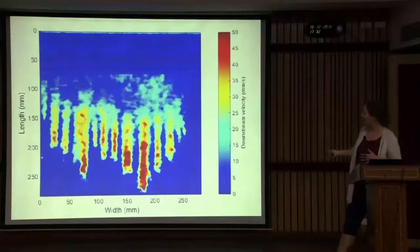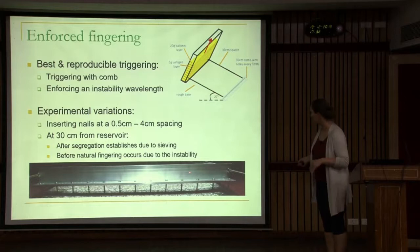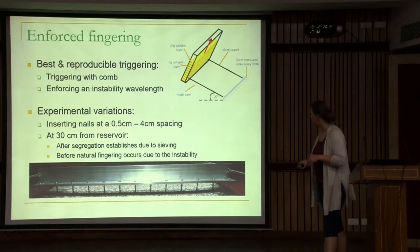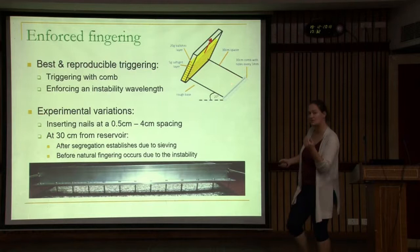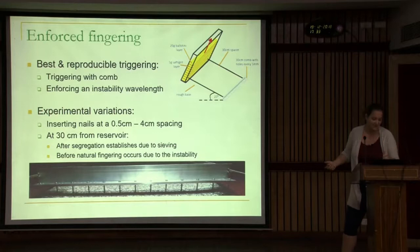This is natural fingering, but we can also enforce the fingering. For that we use a device with different holes at certain spacings where we insert nails — our little trigger to create the fingering. We can choose different spacings. At 30 centimeters from the reservoir, we're still in the area where natural fingering doesn't happen yet — the segregation process has started, but natural fingering happens a little bit later. So that is our artificial fingering.